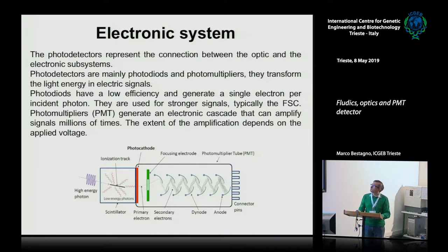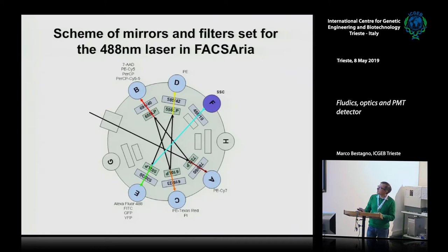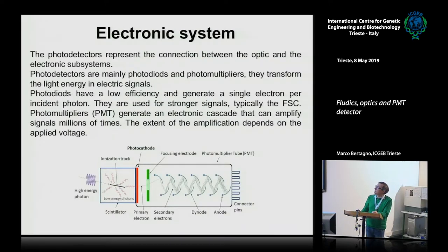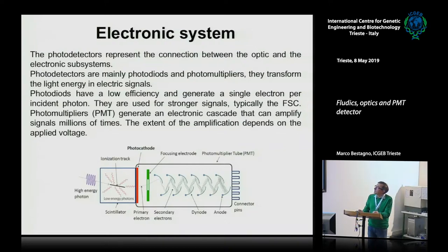Now we come to the electronic system. After separating light and sending it to the appropriate detectors, these detectors transform incident light into electric signals. They are mainly of two categories: photodiodes and photomultipliers. Photodiodes are the most simple, have low efficiency, generate a single electron per incident photon, and are used for stronger signals — typically the forward scatter. Photomultipliers, more importantly, generate an electronic cascade that can amplify the signal up to millions of times.